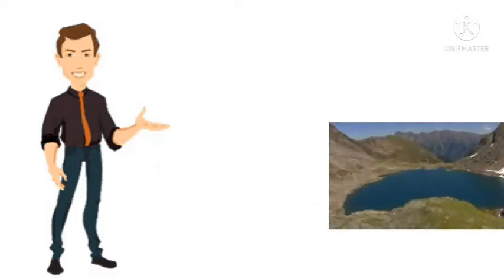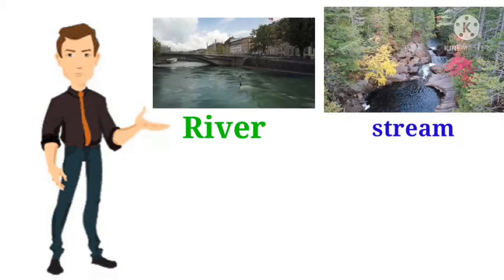And we said that a lake is a body of water surrounded by land. Streams and rivers are bodies of water that flow. While the river is wide, a stream is narrow and shallow compared to other bodies of water.